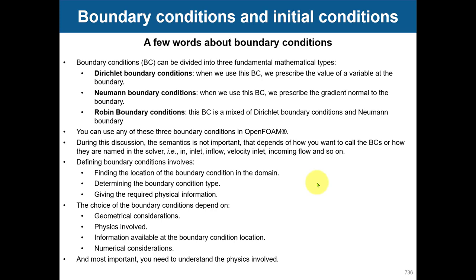There are many variants, but something important to define boundary conditions: you need to find the location of the boundary condition in the domain, so you need to have that patch available — we studied that during the meshing lectures. You need to determine the boundary type and give the numerical value. The boundary type is set in constant/polyMesh/boundary, and the numerical value is given in the folder 0 where you have boundary and initial conditions.